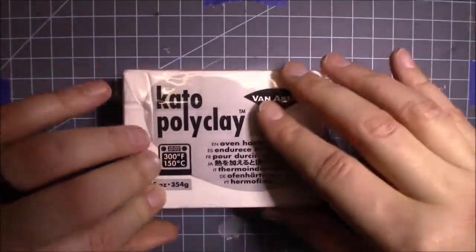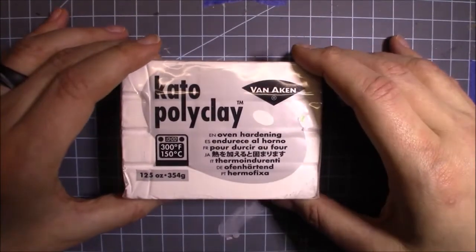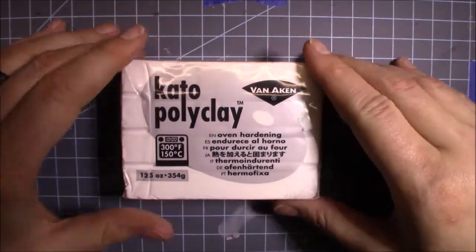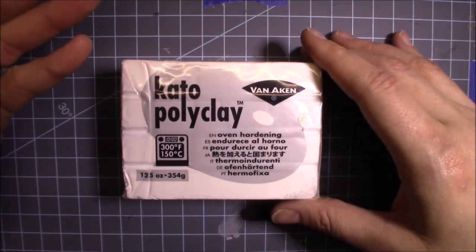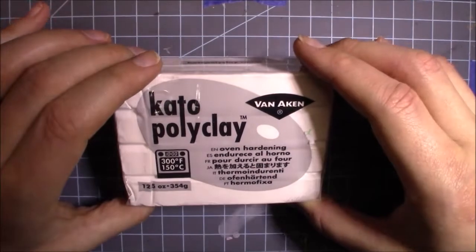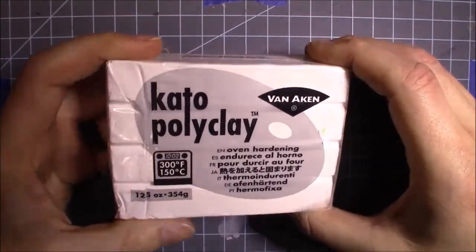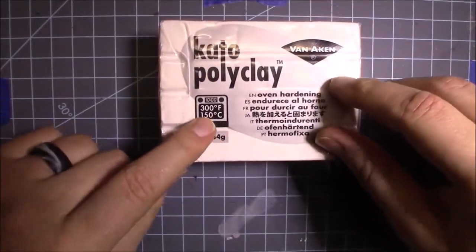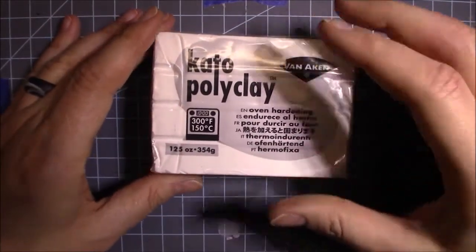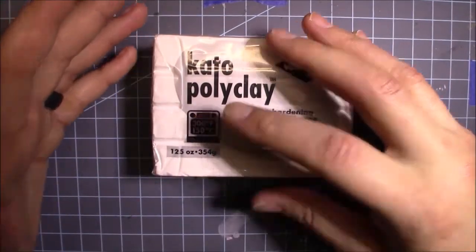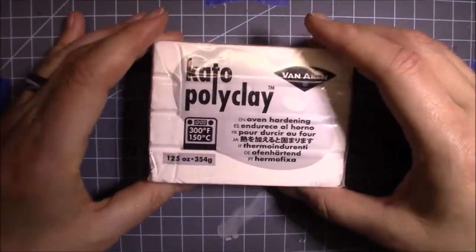I've got this oven-baked clay. I've used the Super Sculpey brand before, but when I went to the hobby store, a lot of people had the same idea I did for making stuff for Christmas, so I'm going with this brand. Kato polyclay. Bake at 300 degrees for about 10 to 15 minutes, depending upon thickness. So, we're going to do that.